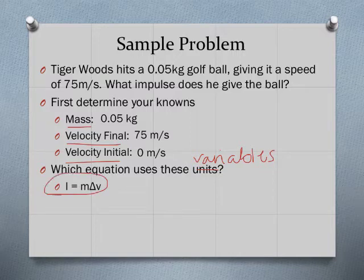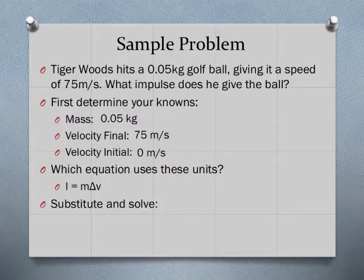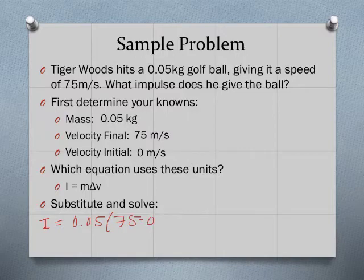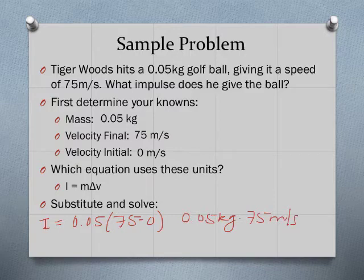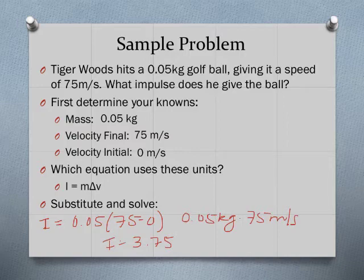Now that we have mass, VF, and V0, we need the equation that uses mass and change in velocity — that's our first version: I = m(VF − V0). Plugging in: I = 0.05 × (75 − 0) = 0.05 kg × 75 m/s. That gives an impulse of 3.75 kg·m/s. You could also write Newton seconds and that would not be incorrect at all.